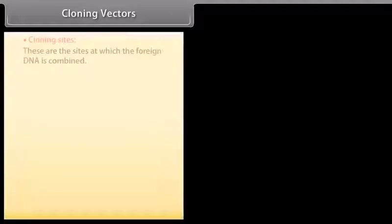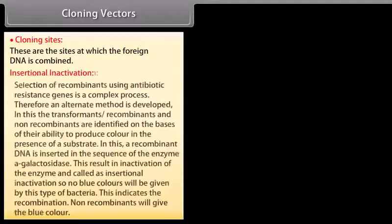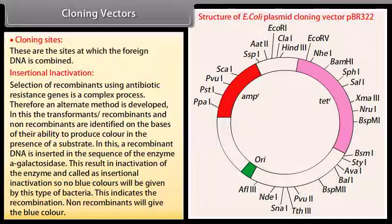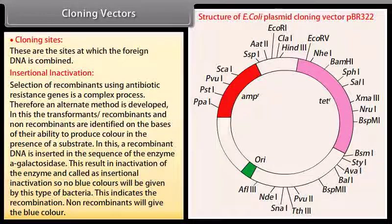Cloning vectors are the sites at which the foreign DNA is combined. Insertional inactivation: selection of recombinants using antibiotic resistance genes is a complex process, therefore an alternate method is developed. In this method, transformants — recombinants and non-recombinants — are identified on the basis of their ability to produce color in the presence of a substrate. A recombinant DNA is inserted in the sequence of the enzyme β-galactosidase, resulting in inactivation of the enzyme, called insertional inactivation, so no blue color is produced by this type of bacteria. This indicates recombination. Non-recombinants will give blue color.